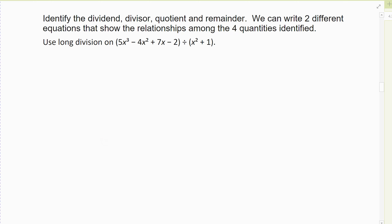All right, so second example of long division where we'll identify the dividend, divisor, the quotient, and the remainder, and we'll write the two different equations that represent the division. In this first example, I don't have to put a placeholder in because it's a cube, a squared, a one, and a two — so three, two, one, zero — and it's a slightly bigger polynomial that I'm dividing by x squared plus one.